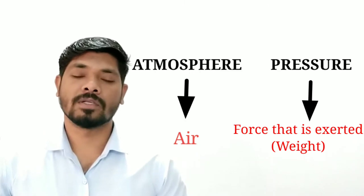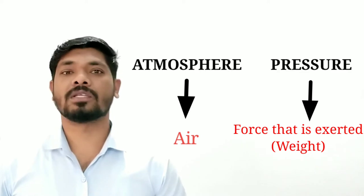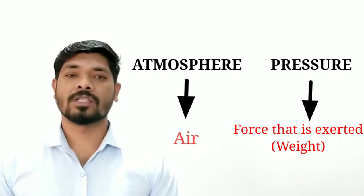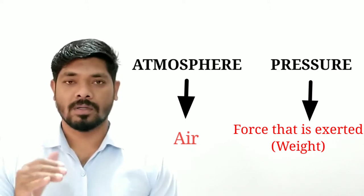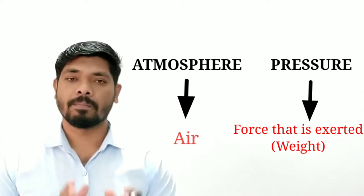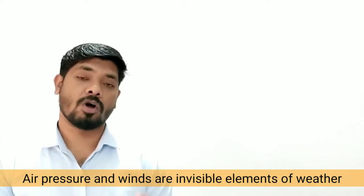Here two terms are there to understand: atmosphere and pressure, both together defining atmospheric pressure. Atmosphere means in simple terms it is air, and pressure in simple terms is the continuous force that is exerted, or the weight of the air. Air pressure and winds are invisible elements of weather which influence all other components of weather — temperature and humidity.